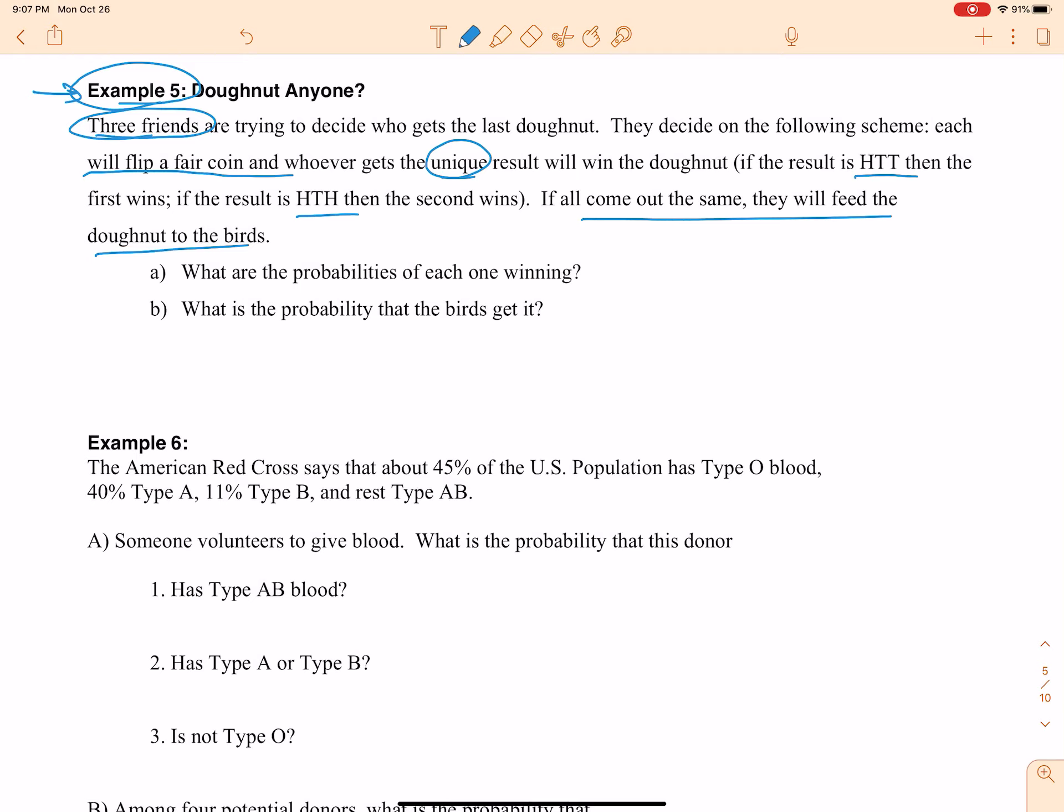So we maybe should not be eating all that sugar and fat. For part A, what are the probabilities of each one winning?